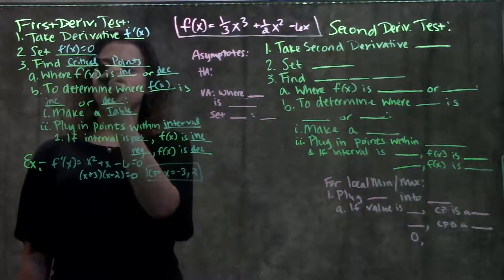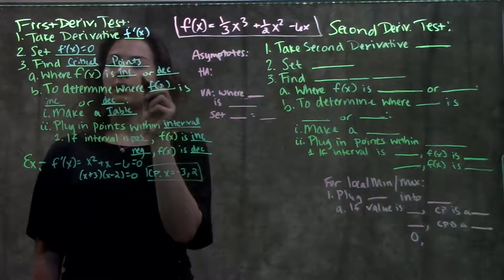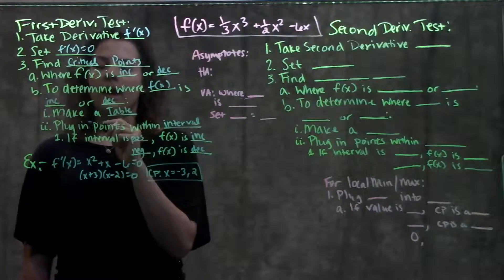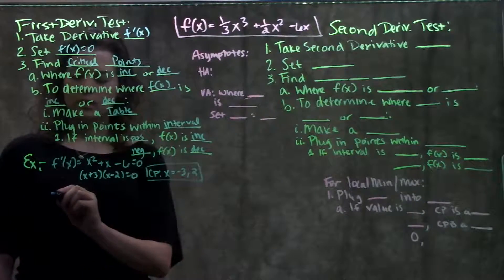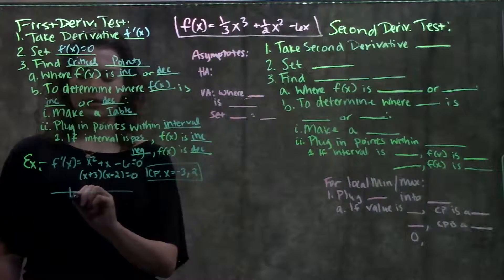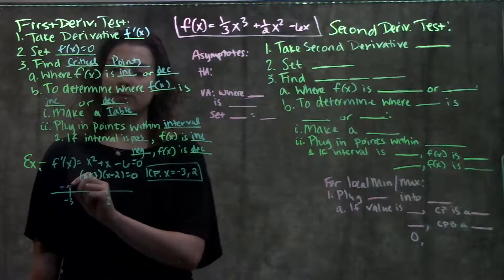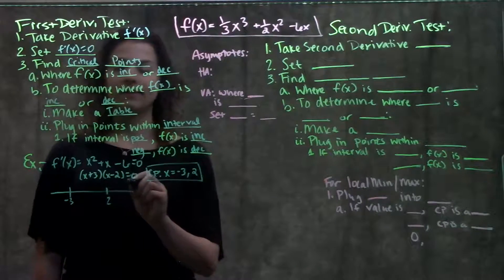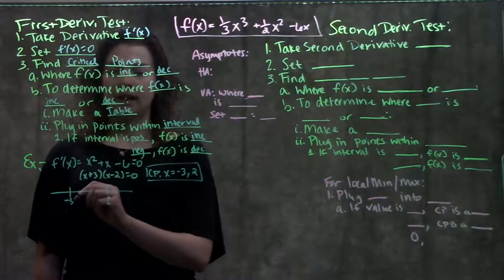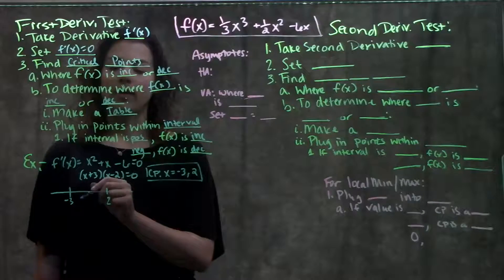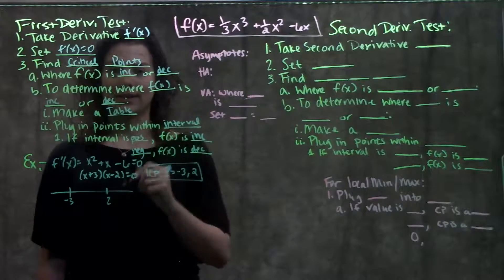We found our derivative and the critical points by setting the derivative equal to zero. Next step is to make a table. I draw my number line and put on my critical points, negative 3 and 2. Now I'm going to pick test points within each of these intervals to plug into my derivative to see what the sign of my derivative is, so that I can determine whether my original function is increasing or decreasing.